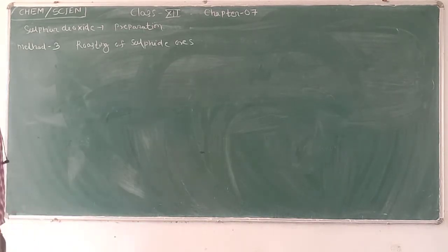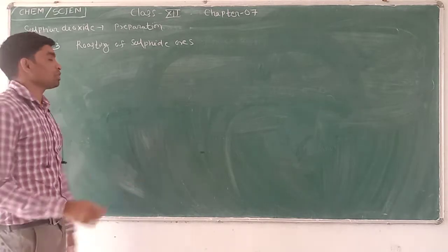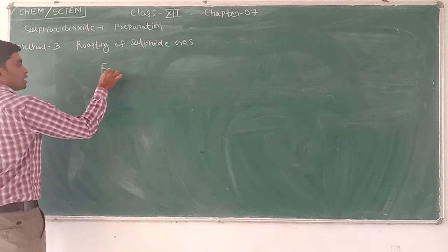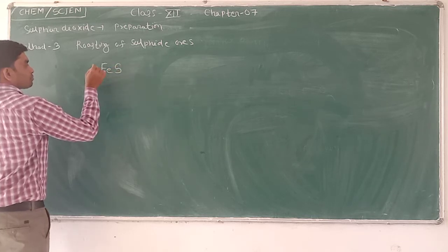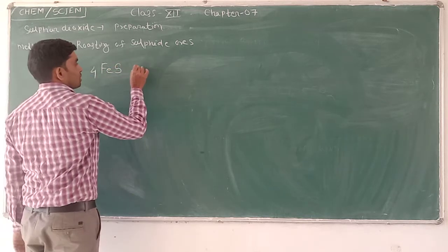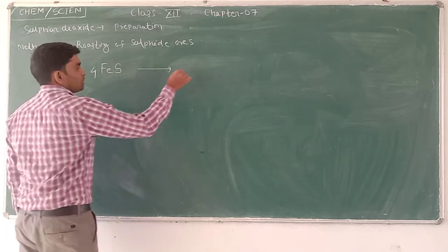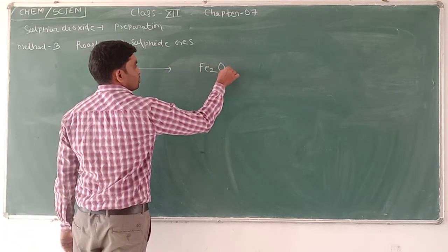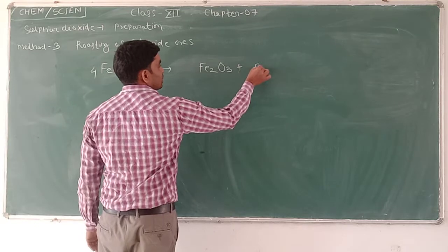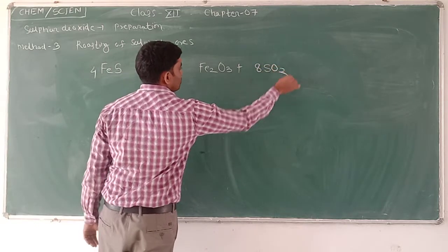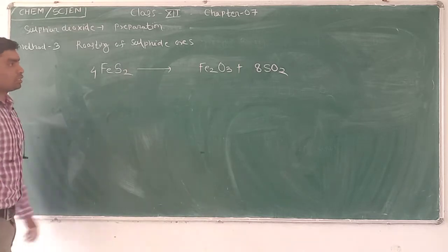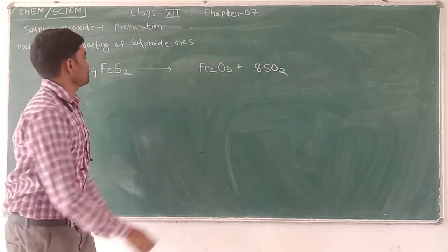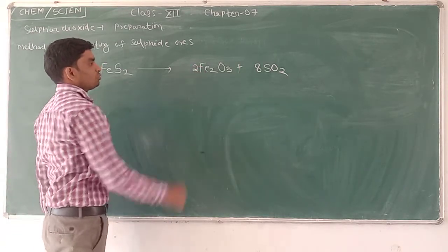Next, by roasting sulphide ores like iron sulphide. 4FeS2 plus 11O2 gives 2Fe2O3 plus 8SO2. This produces sulphur dioxide.